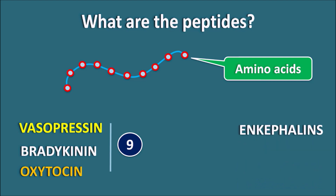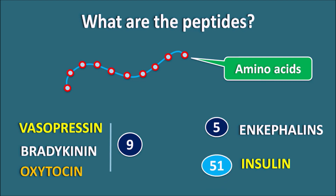Similarly, enkephalins are opioid peptides which are pentapeptides, so they have five amino acids. And insulin is actually a protein — a dimeric protein made up of fifty-one amino acids. So all these are various peptides as well as proteins which play an important role in our physiological system.